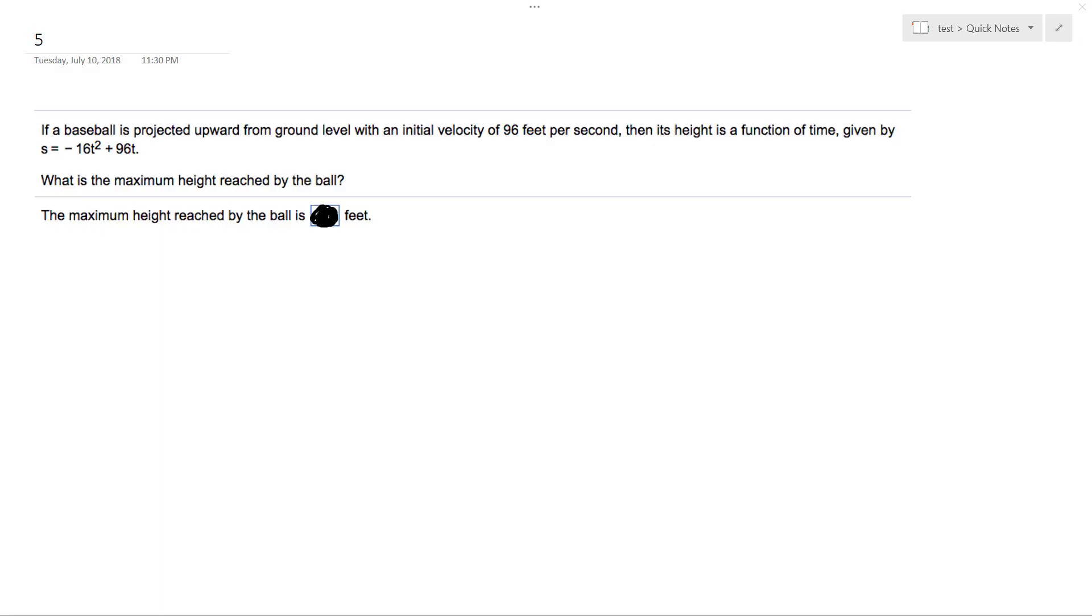A baseball is projected upward from ground level with an initial velocity of 96 feet per second, and its height is a function of time given by s = -16t² + 96t. What is the maximum height reached by the ball?